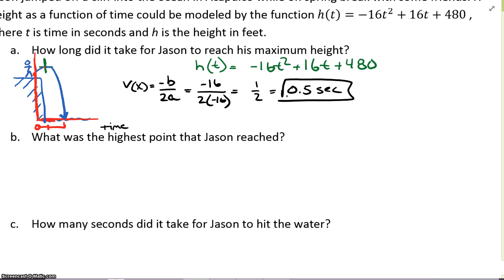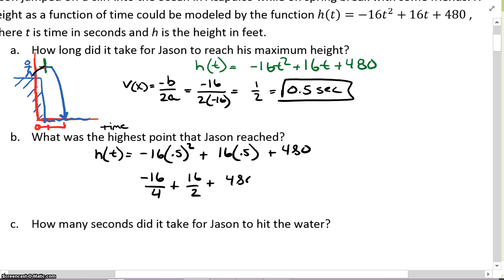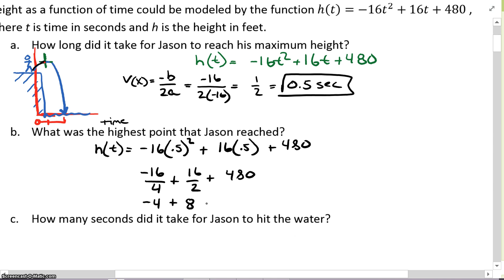What is the highest point that Jason reached? Well, Jason reached the highest point at 0.5 seconds, so we're just going to plug that back into the equation. h(t) equals -16 times 0.5² + 16 times 0.5 + 480. If we kept it in halves, 0.5² is 0.25, so we could say -16/4 + 16/2 + 480. -16/4 is -4, 16/2 is 8, all I did was use 1/2 instead of 0.5 + 480. So -4 + 480 equals 484 feet.